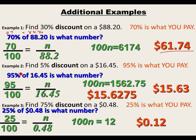For the second problem, you could have done 0.95 times 16.45 — that's 95% since there's a 5% discount. And for the third problem, you could have done 0.25 times 0.48 — that's 25% since there's a 75% discount. So 0.25 times 0.48.